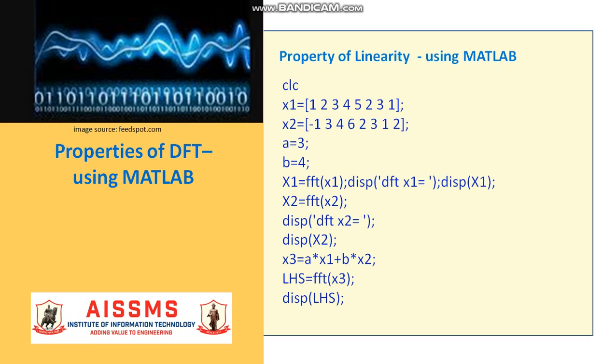We can conclude from this property that DFT of linear combination of two or more signals is equal to the sum of linear combination of DFT of individual signals. Let us demonstrate this property with the help of a MATLAB program. Here X1 and X2 are as shown. We take A equal to 3 and B equal to 4. Taking the FFT of those input sequences, we store them in capital X1 and X2. We display the DFT of X2.